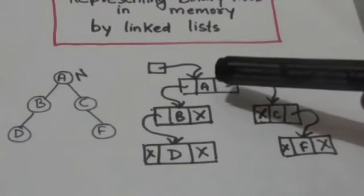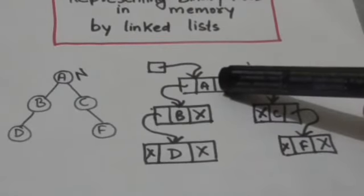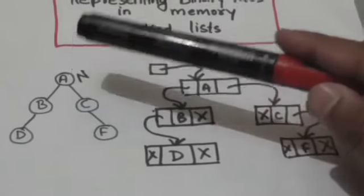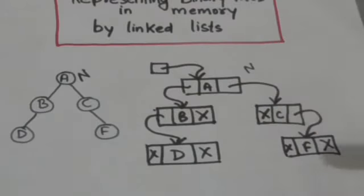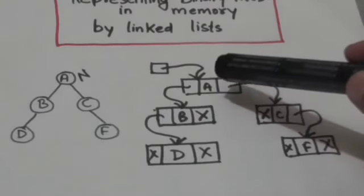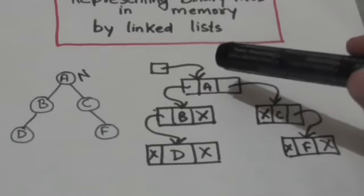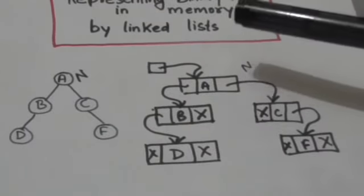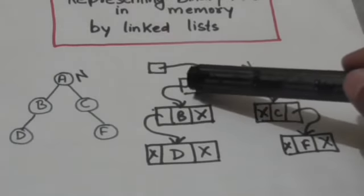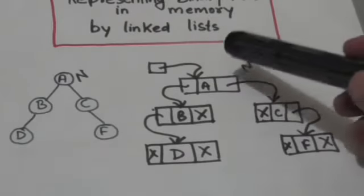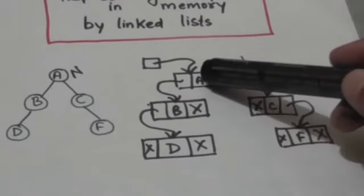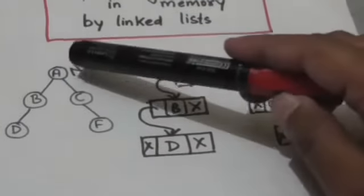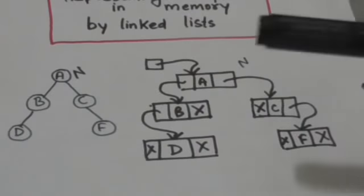Suppose there is a node of the linked list which corresponds to a node n of the binary tree. Then one part of this node of the linked list will contain the data which is stored at node n of the binary tree, and one part will contain the location of the node of the linked list which corresponds to the left successor of node n of the binary tree.